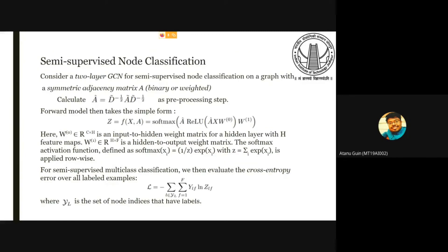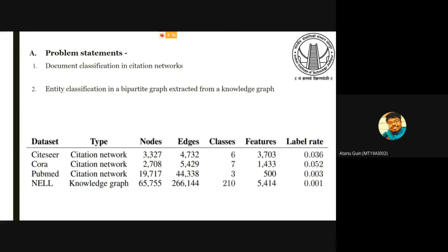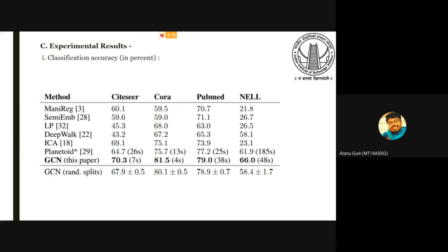In supervised node classification task, we have already seen how the propagation model would look like. This is the output of the network and we are using activation function as softmax. We are using cross-entropy loss for all the labels that we have. For the experiments, we have mainly two types of datasets. One is citation network and another one is knowledge graph from which we have extracted a bipartite graph. The nodes can be expressed as documents and the links are expressed as undirected edges. The classification accuracy can be expressed as shown in the table and it can be seen that they are performing better than other competitors.